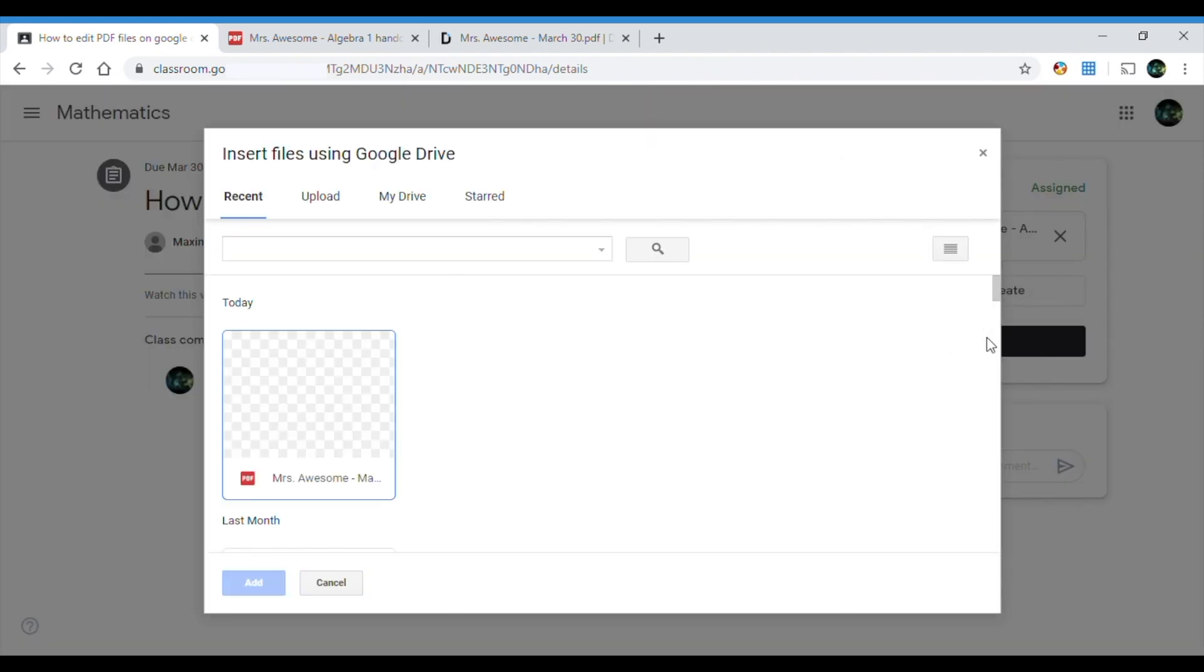Now I'm gonna click on Add or Create and I'm gonna click on Google Drive. So here's my Google Drive and here it tells me the most recent one that I saved. Here it is. And how do I know it's the right one? Because it says Mrs. Awesome, March the 30th. And for whatever reason you want to check it, you can just click on it and click Add. Right now I'll show you how to check it.